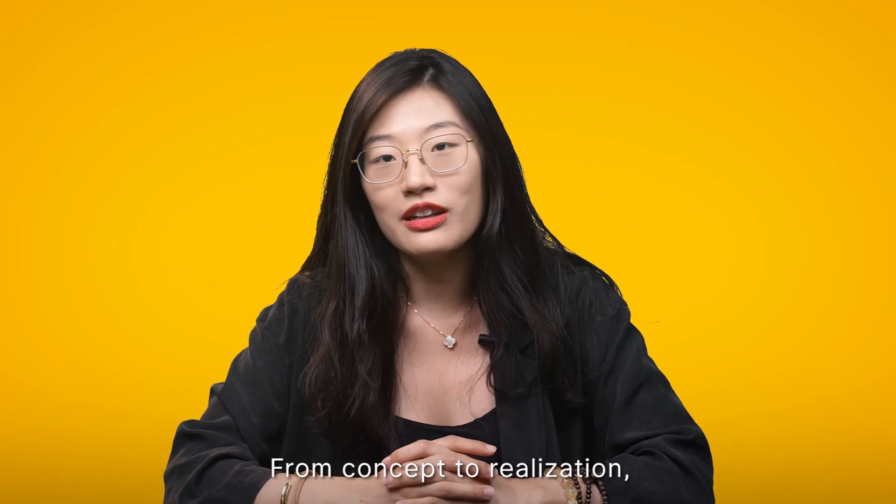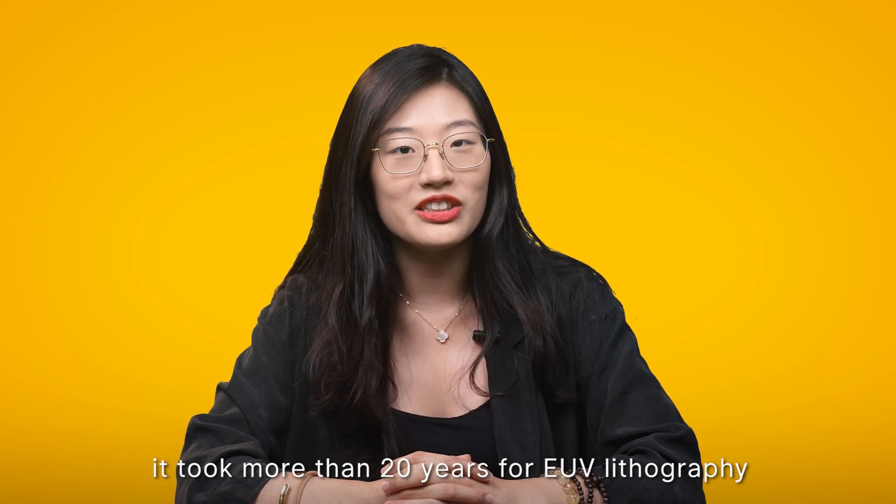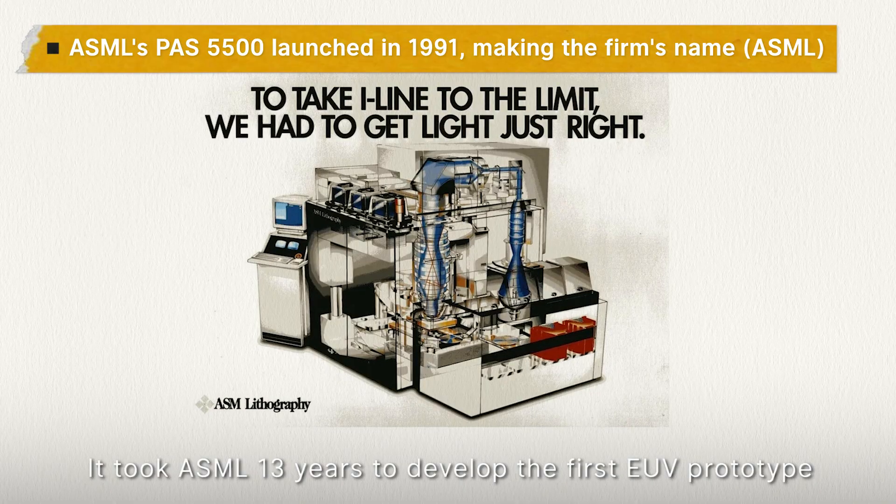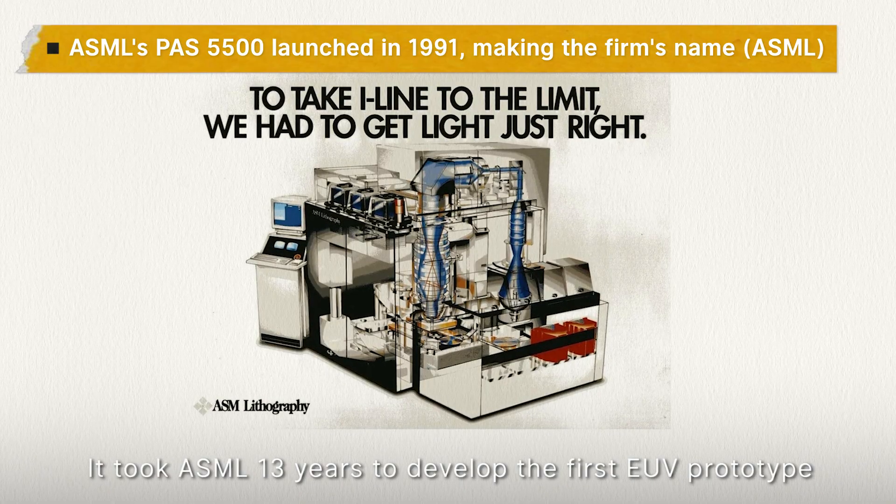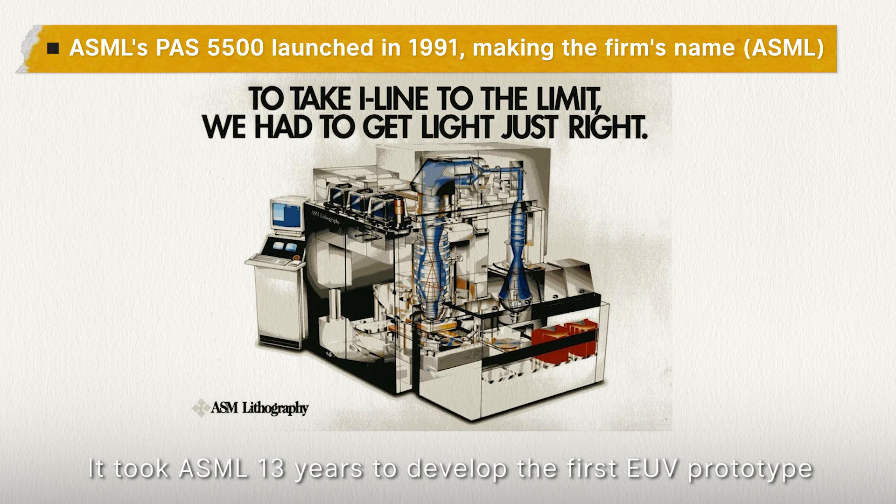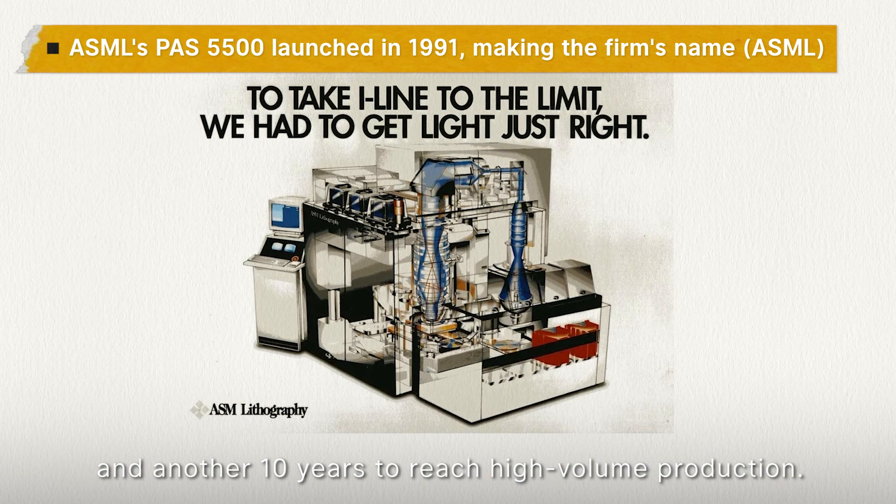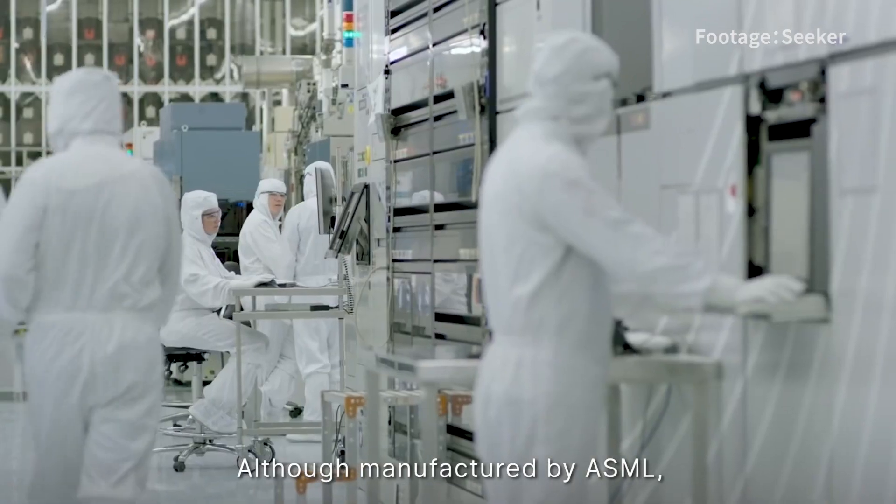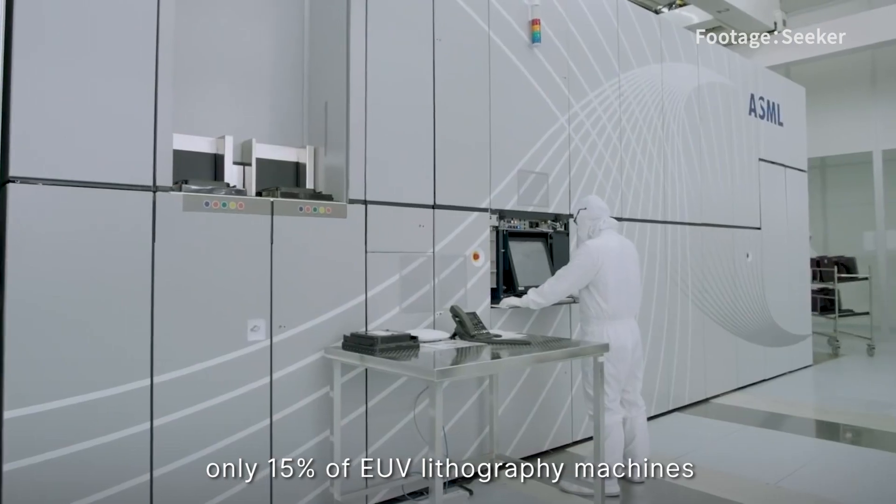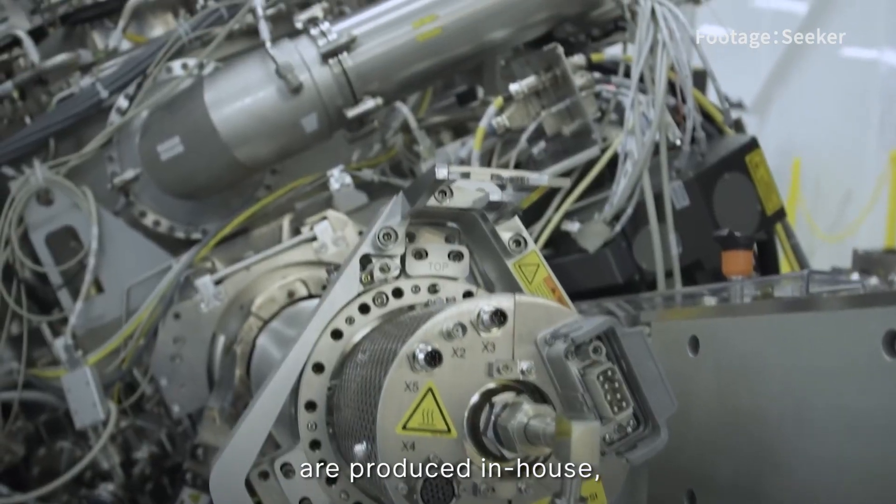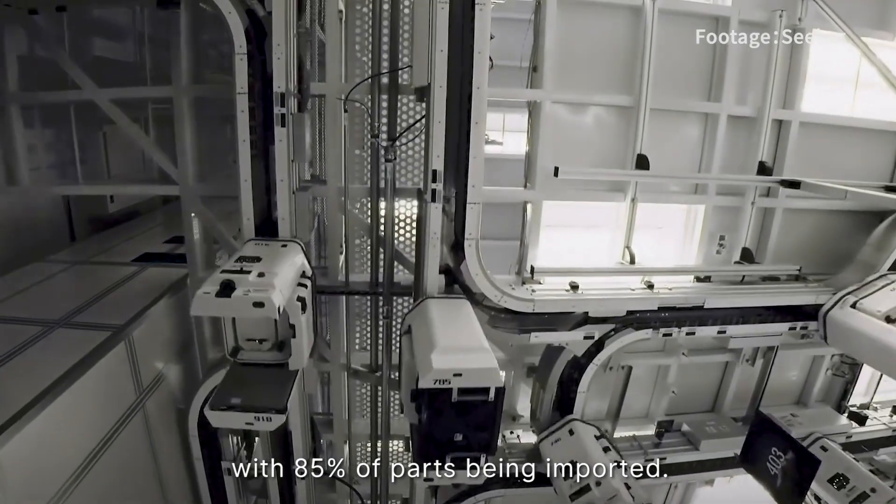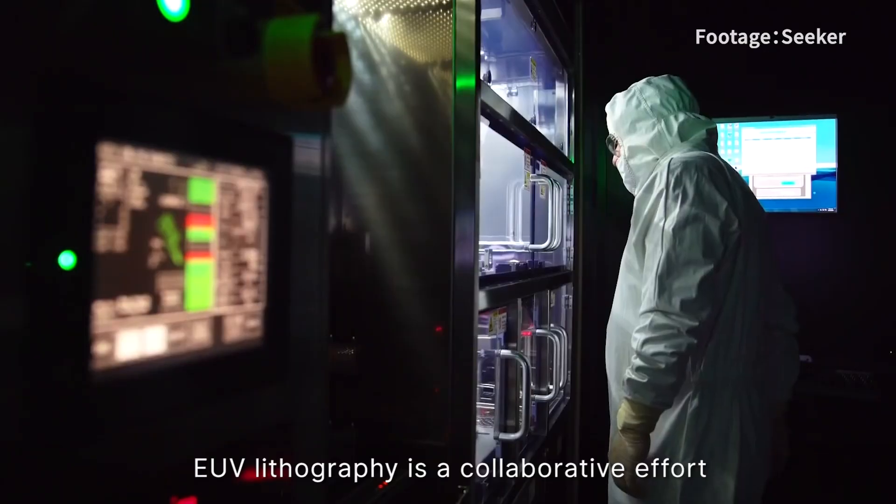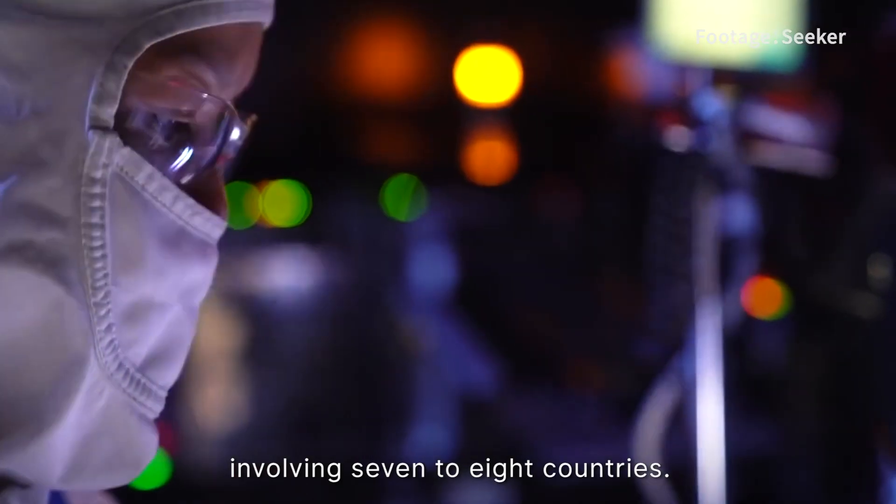From concept to realization, it took more than 20 years for EUV lithography to become commercially viable. It took ASML 13 years to develop the first EUV prototype and another 10 years to reach high-volume production. Although manufactured by ASML, only 15% of EUV lithography machines are produced in-house, with 85% of parts being imported. EUV lithography is a collaborative effort involving seven to eight countries.